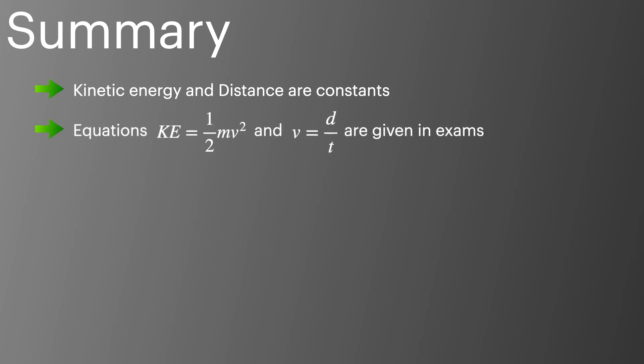So back to the top then for our five key points for your revision. Kinetic energy and distance are constants inside the mass spectrometer. The equations KE equals 1/2 mv squared and v equals d over t are given in the exams but it's not always the arrangement that you're going to need for the calculation. So make sure you've either learnt the forms or you know how to get them.